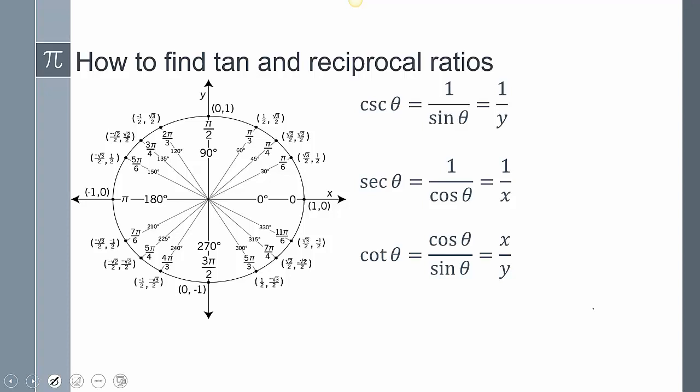Now moving on, the reciprocal functions. We said that cosecant is the same as 1 over sine theta, which is 1 over y. So cosecant theta is 1 over sine theta, which is 1 over y.